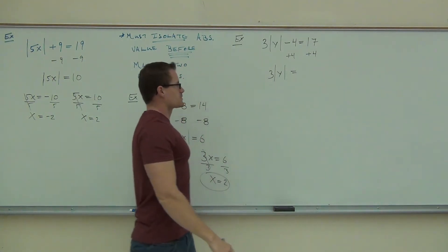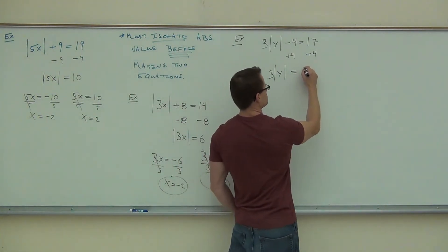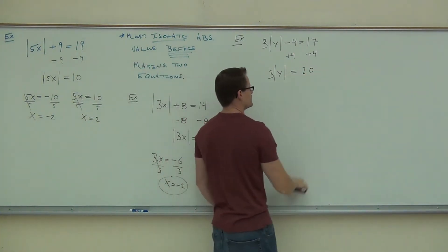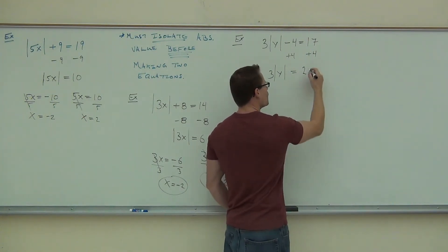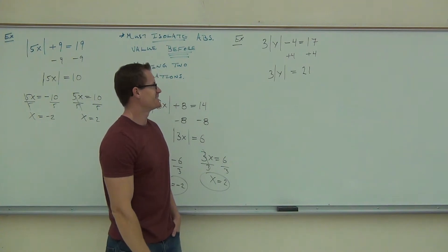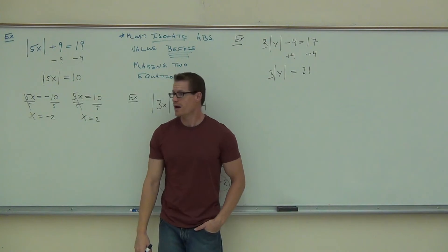3 times the absolute value of y gives us... Sure? 21. 21. Oh, that's 17 plus 4. And now what? Good! You divide by 3. Good, yeah!